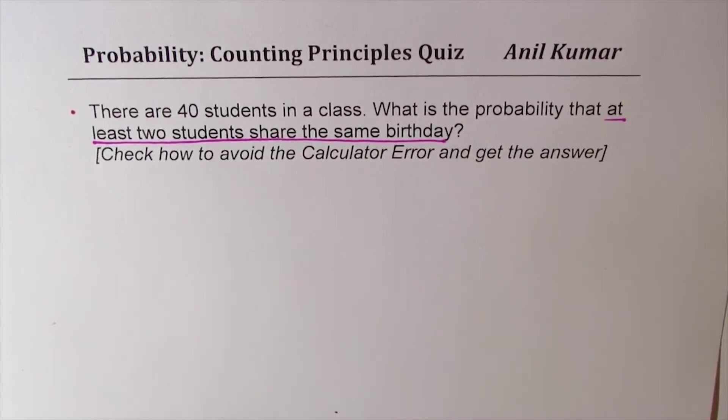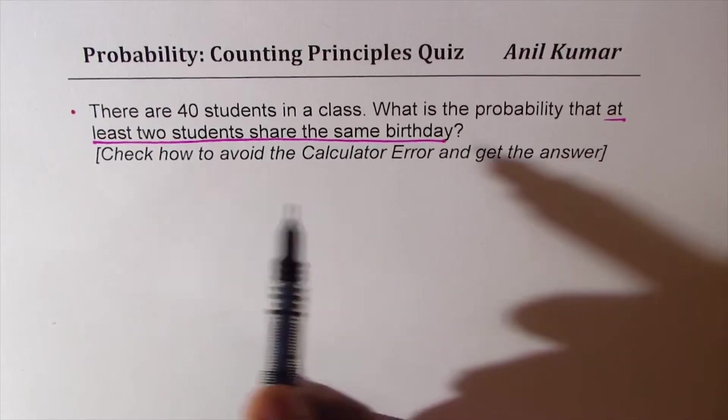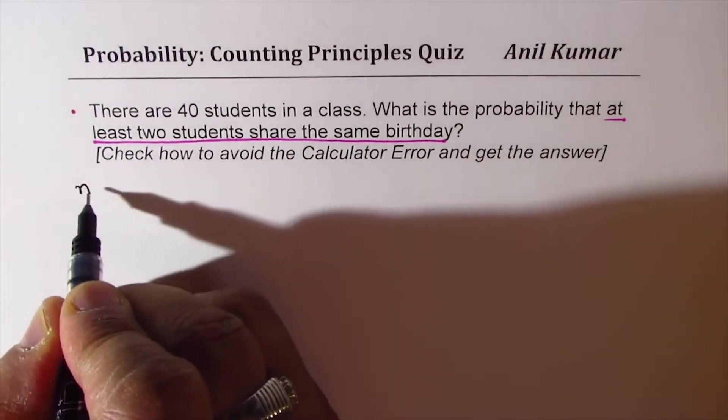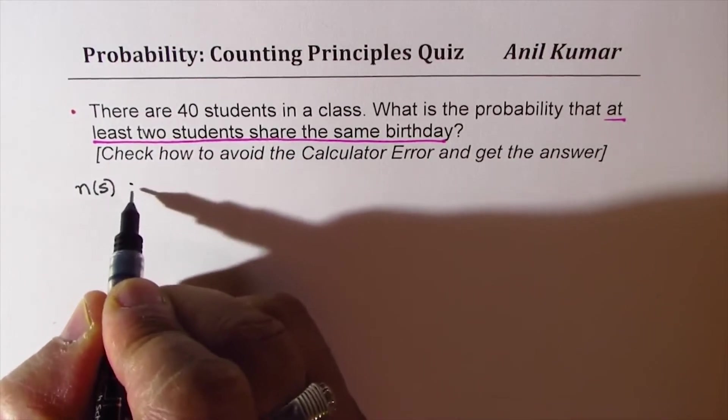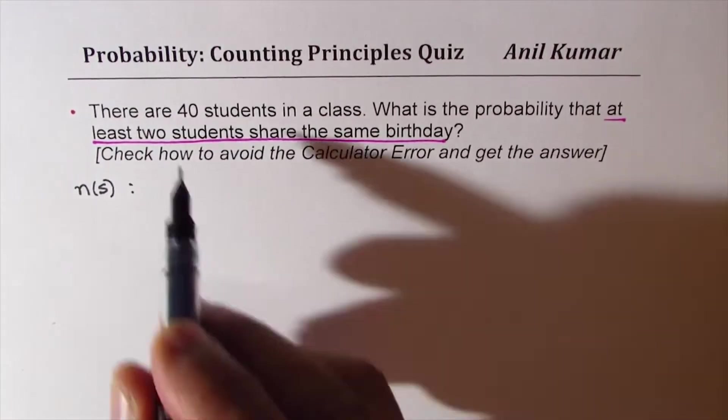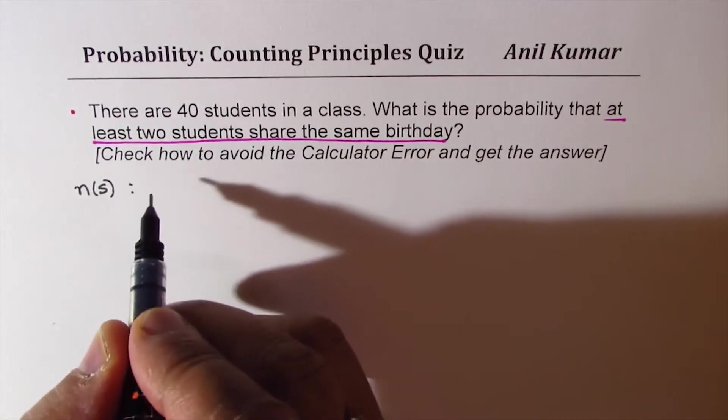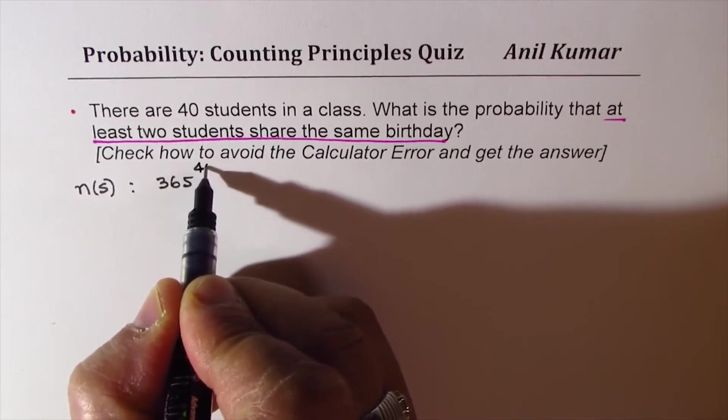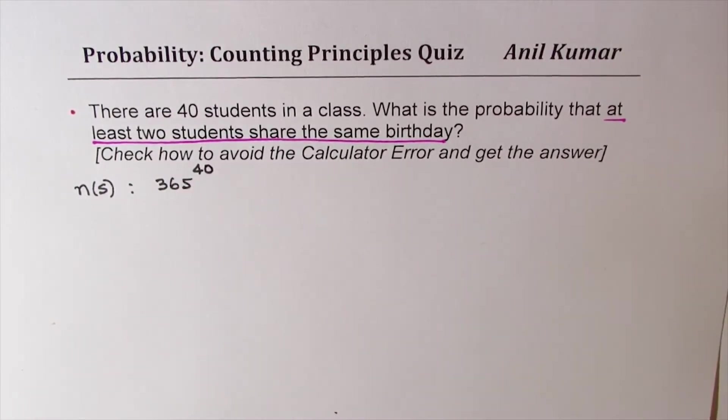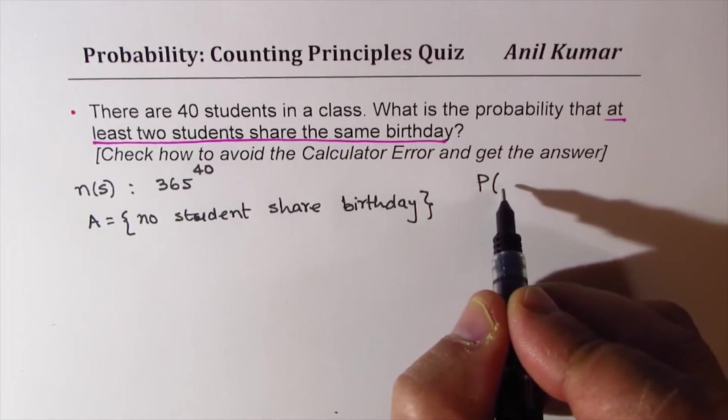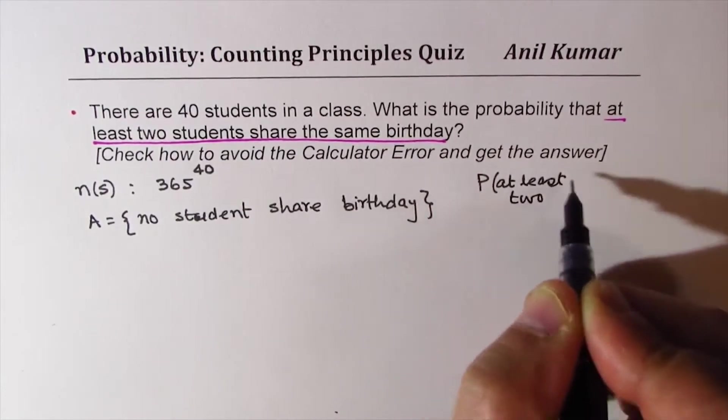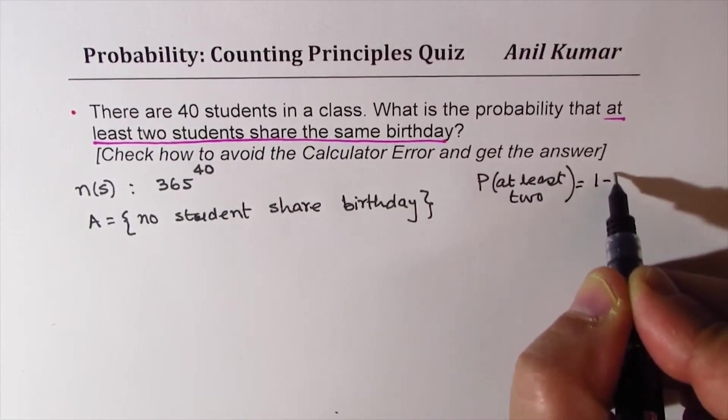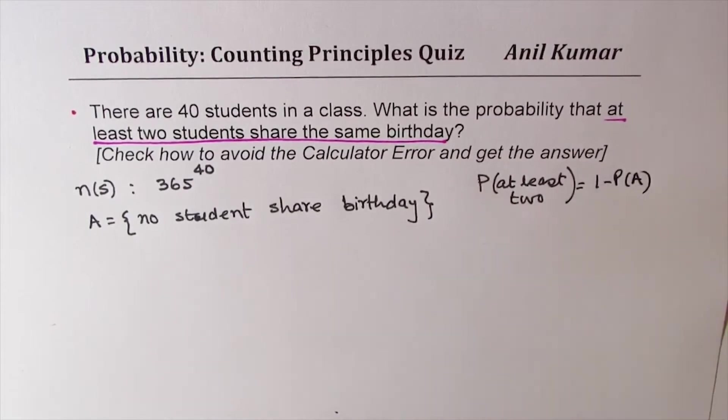Whenever there's a probability question, we think about total options which we have. So there are 365 days and 40 students. So it is 365 to the power of 40. So that is the total number of options. The answer will be at least two students share will be 1 minus probability of A. So that's the whole idea.